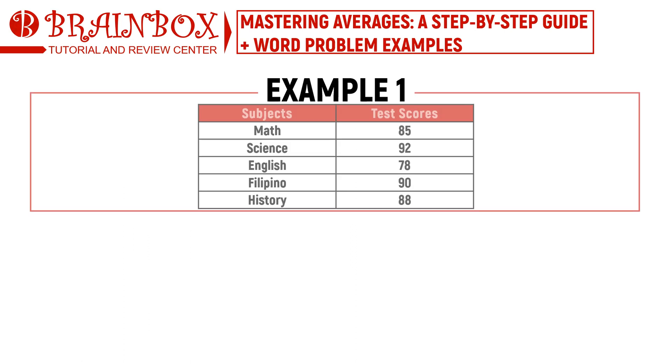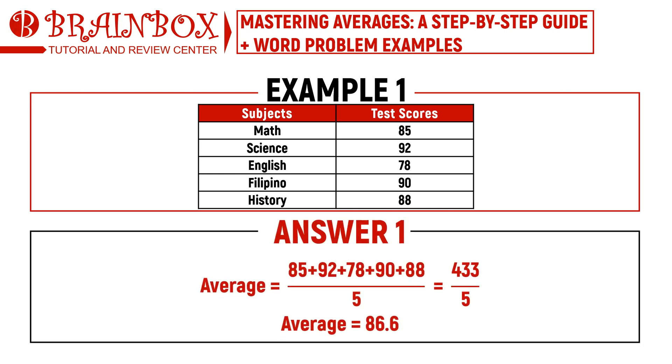Imagine you have a set of test scores: 85, 92, 78, 90, and 88. To find the mean, add these values together: 85 plus 92 plus 78 plus 90 plus 88, and then divide by the total number of scores, which is 5.